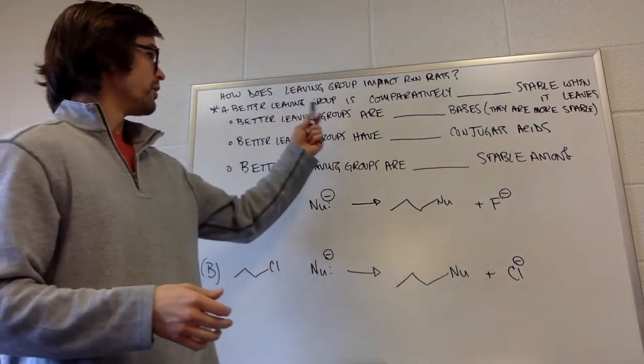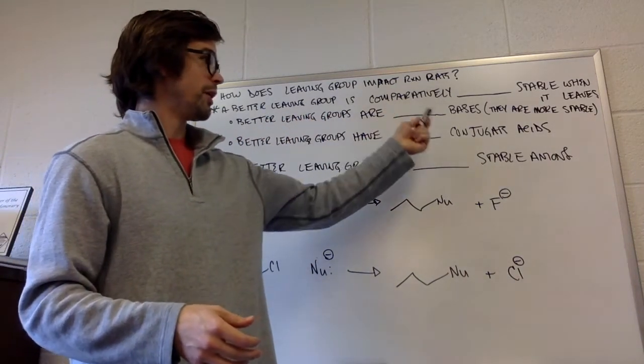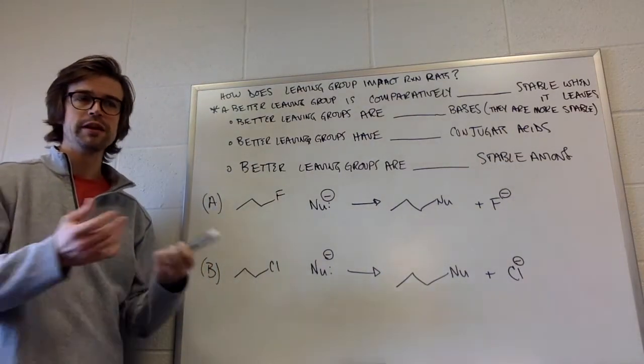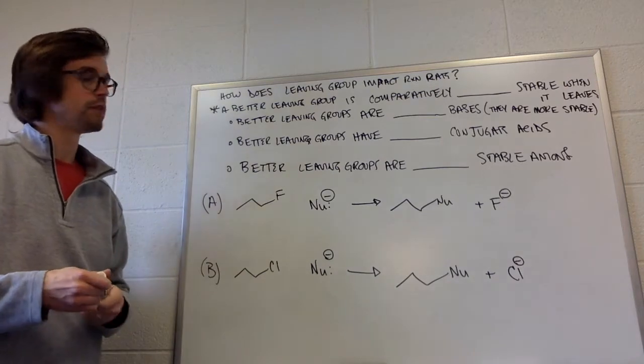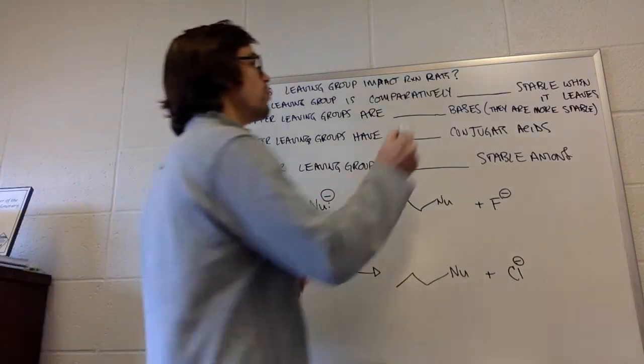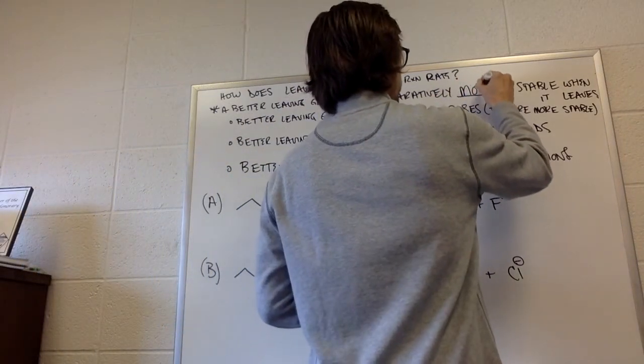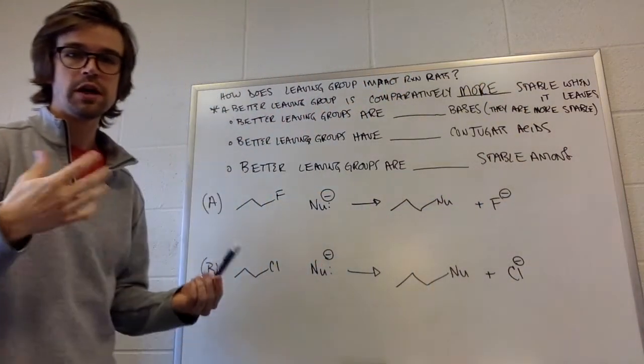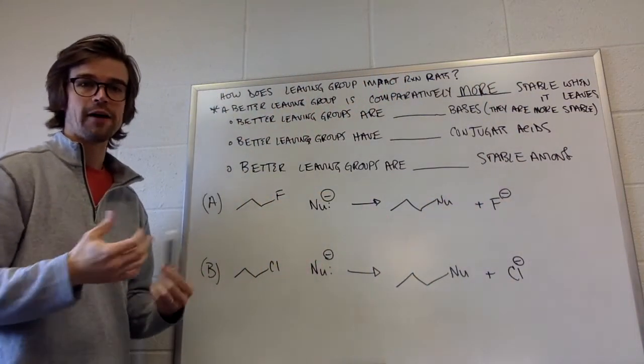A better leaving group is comparably more stable when it leaves. If something leaves, it must be pretty stable by itself, right? So the better leaving group is going to be more stable by itself.